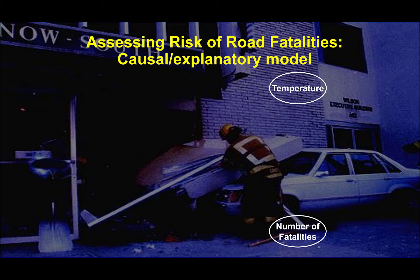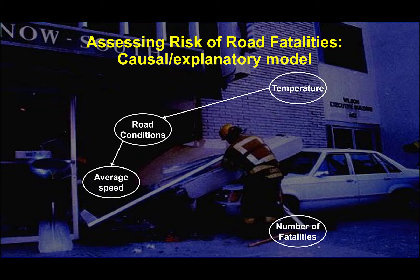We need to look at the underlying causal explanations for this relationship. It's certainly the case that temperature affects road conditions: in the winter, road conditions tend to be worse — icy, snowy, etc. — while in the summer they are better. Road conditions directly influence average speed: when conditions are bad, people drive much slower; when conditions are good, they increase their speed. That combination of road conditions and average speed influences what could be described as the danger level — these counterbalance each other.